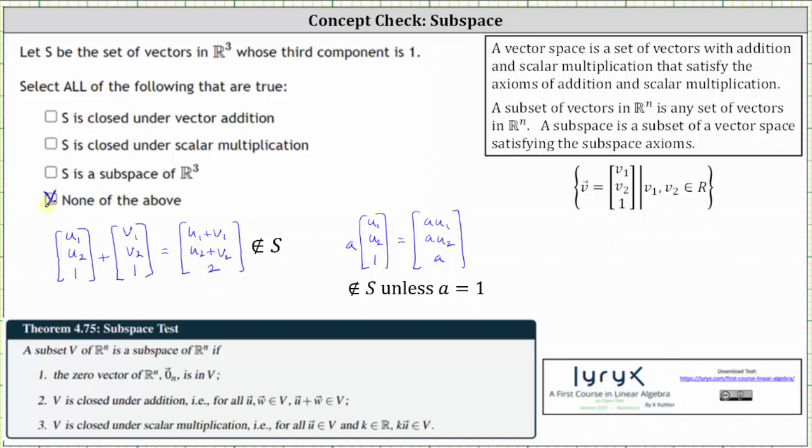I do want to mention there is a third test to test for a subspace, and that is the subset must contain the zero vector. The zero vector in R3 would be the vector zero, zero, zero. This is also not in the subset S because the third component is not one. I hope you found this helpful.